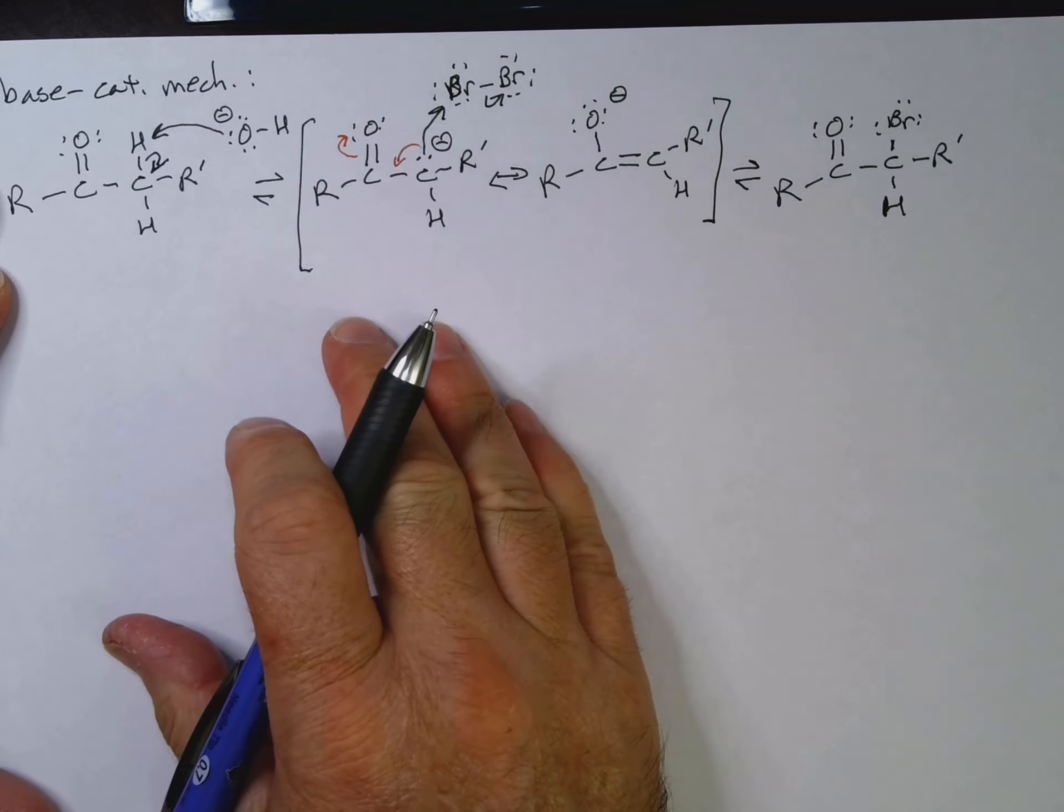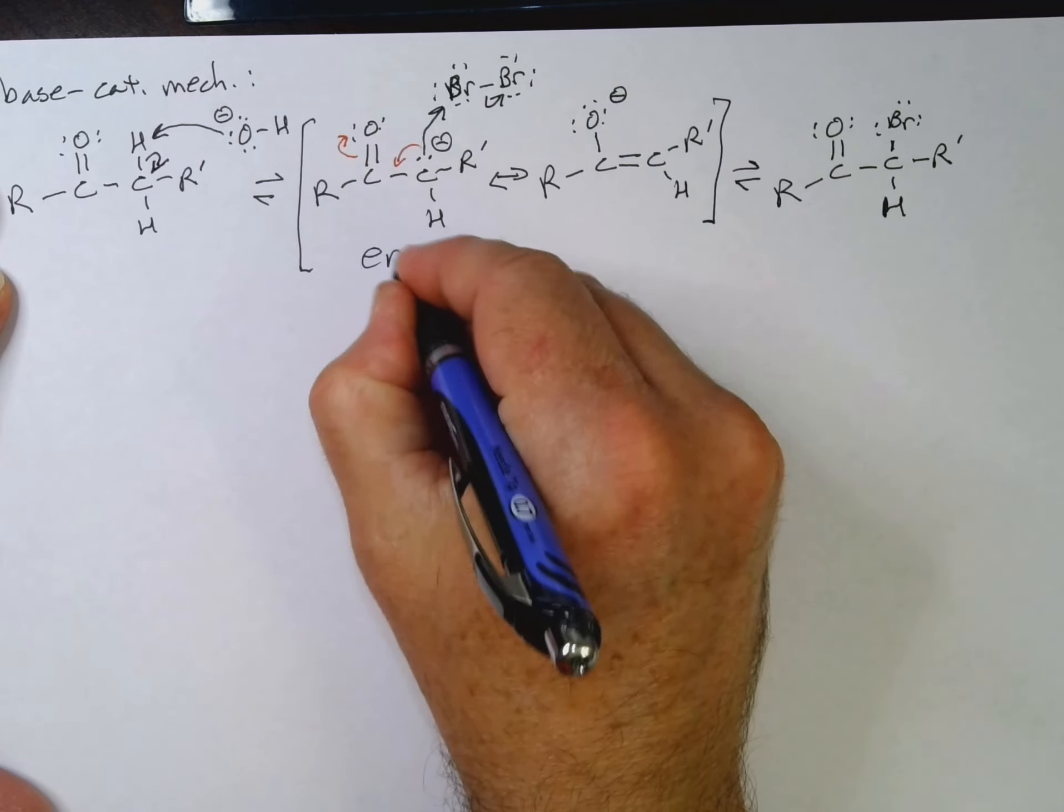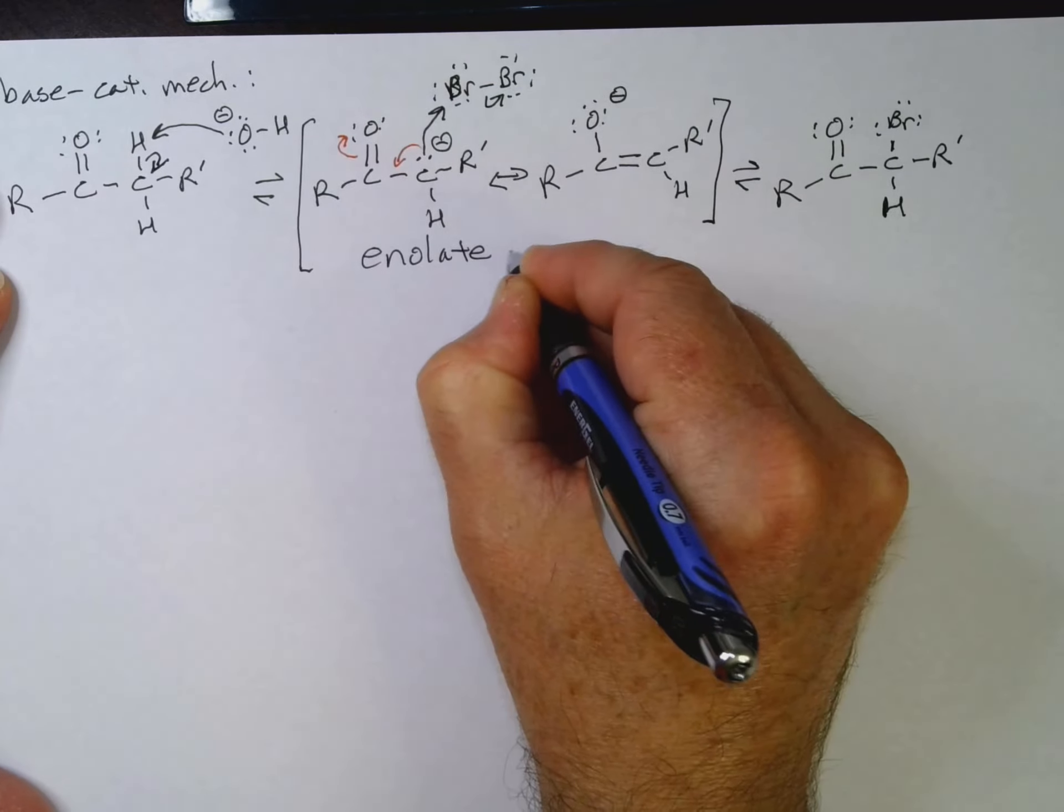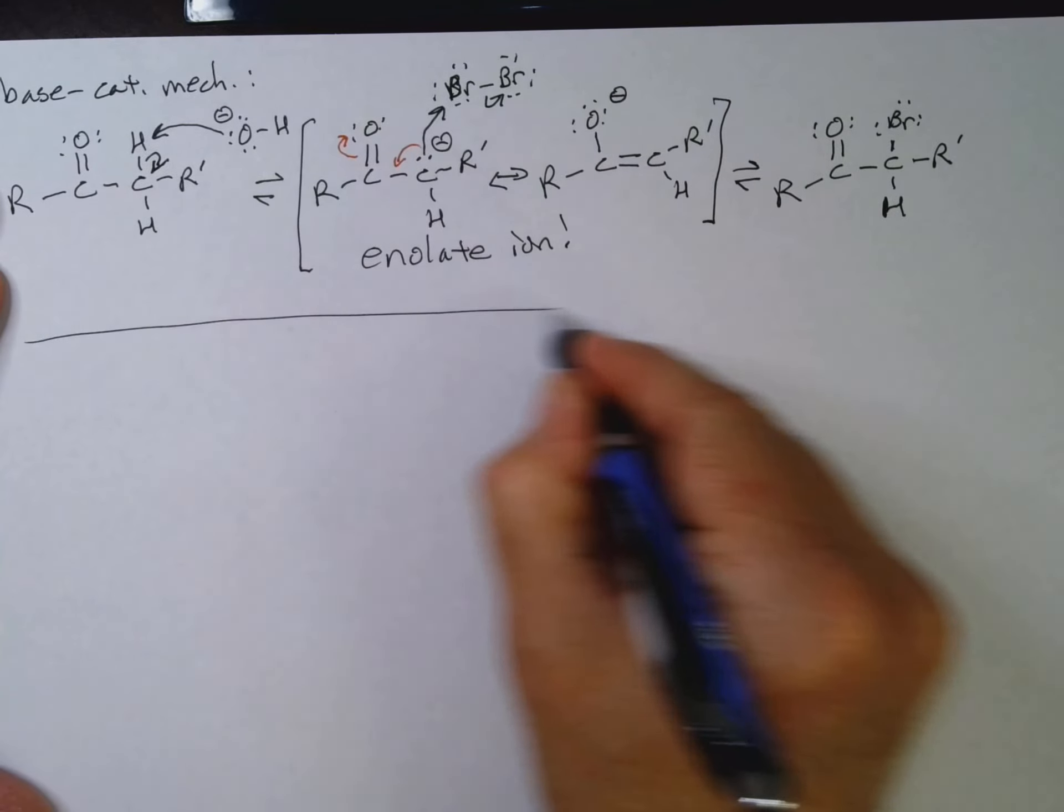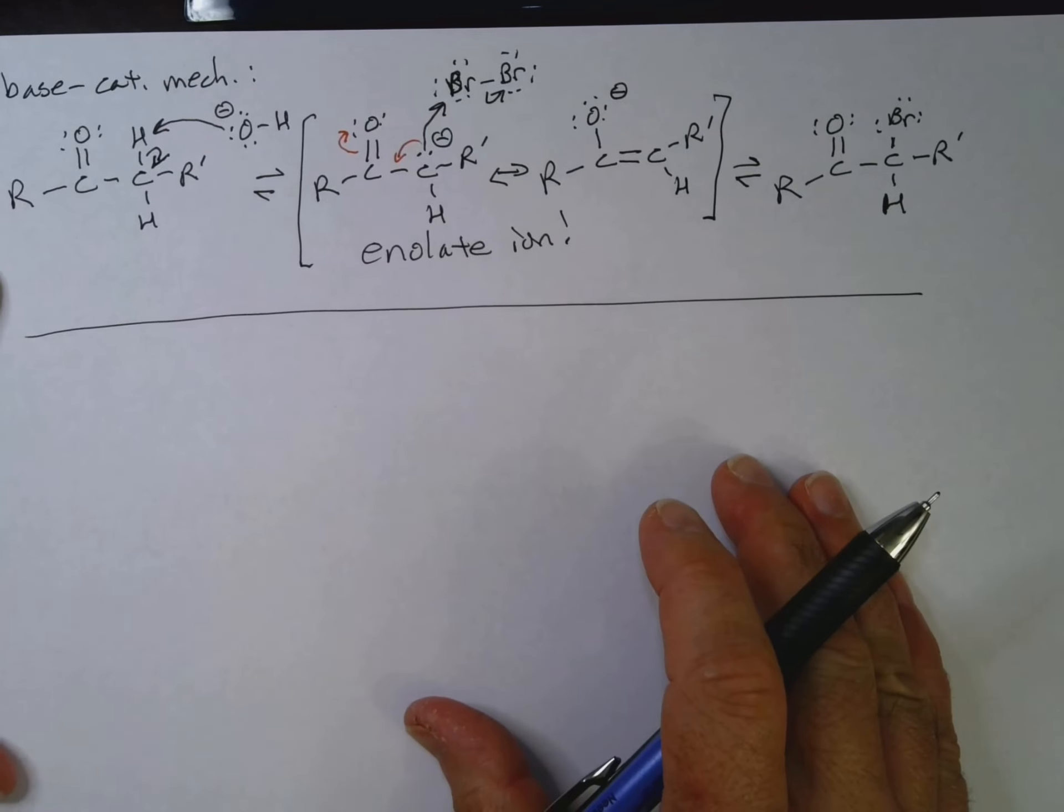Now, the thing with the base catalyzed mechanism is we go ahead and we form the enolate. And that's kind of the key to a lot of the reactivity of the alpha carbon. It's the formation of the enolate. So if we can make an enolate, that is going to be pretty reactive. So we could actually alkylate an enolate.